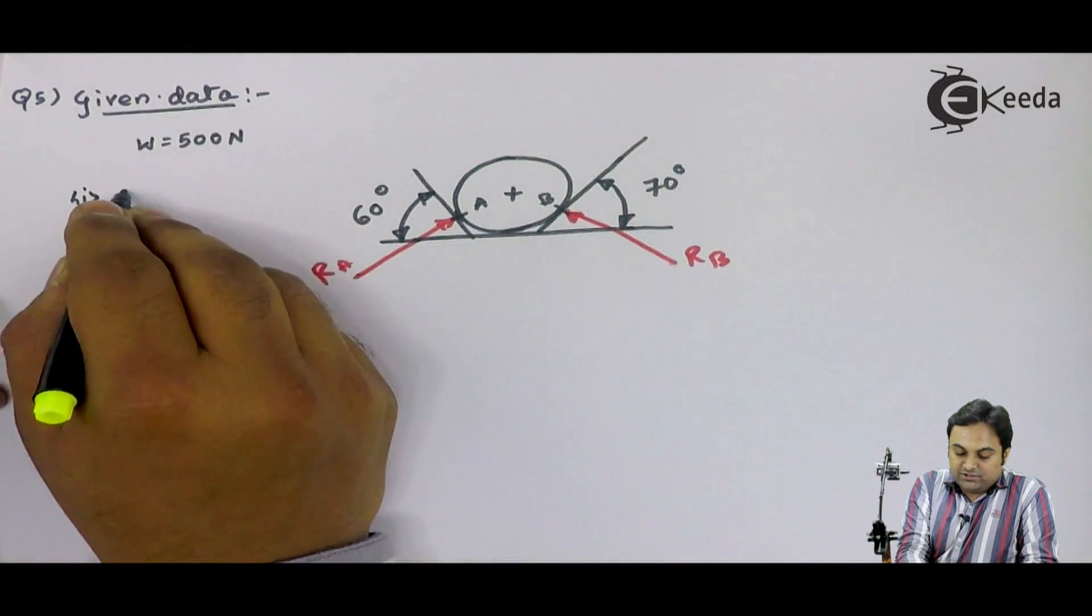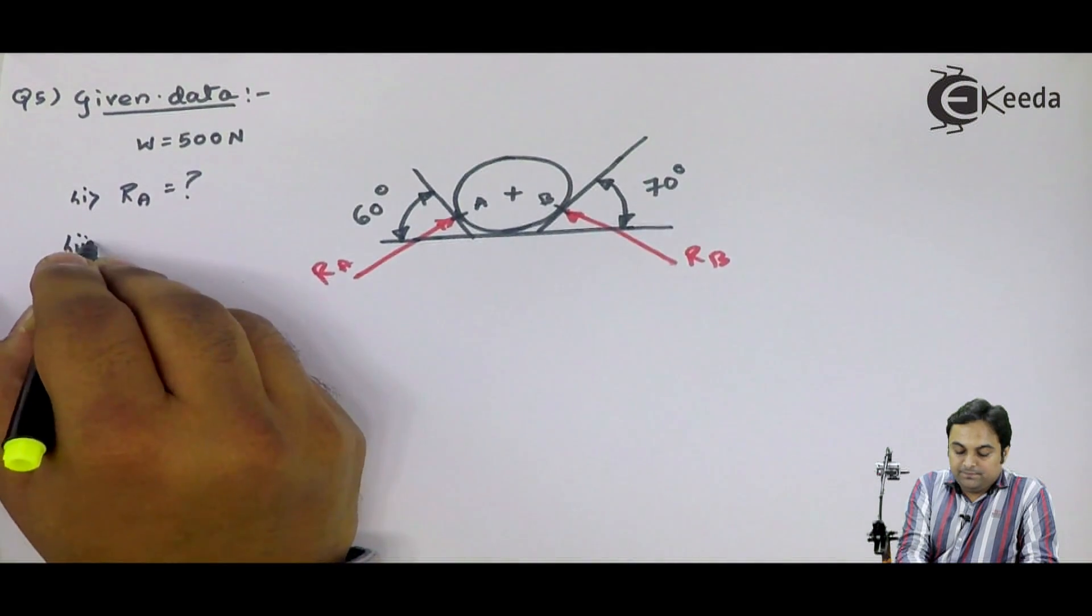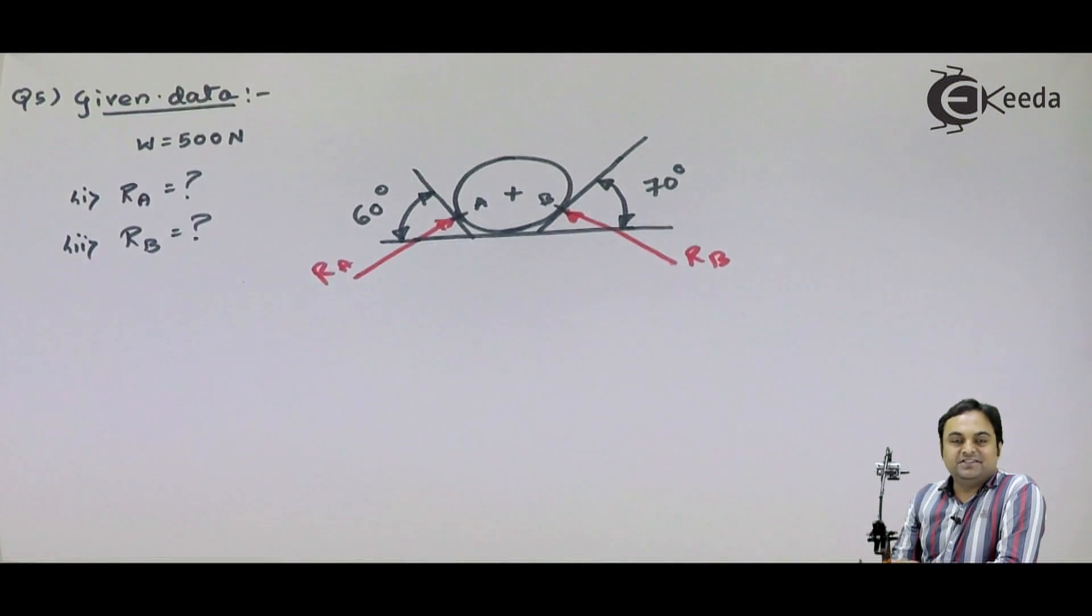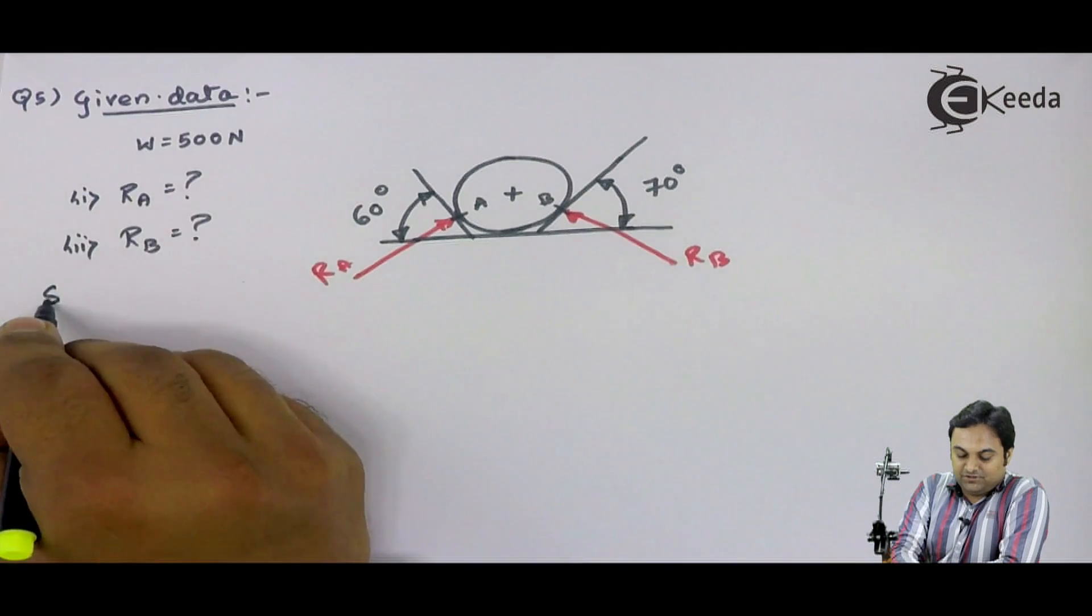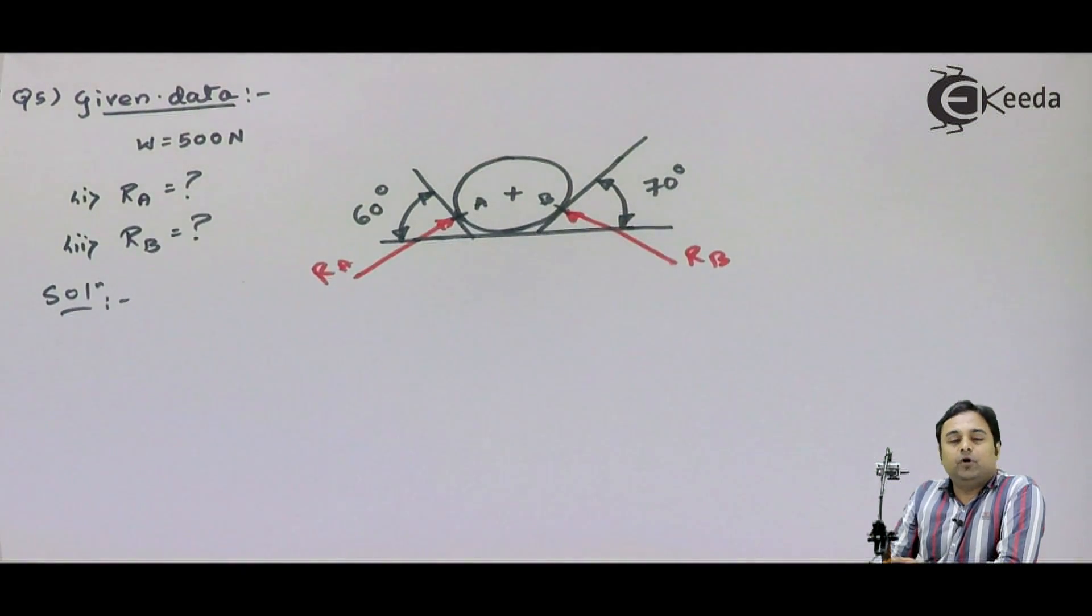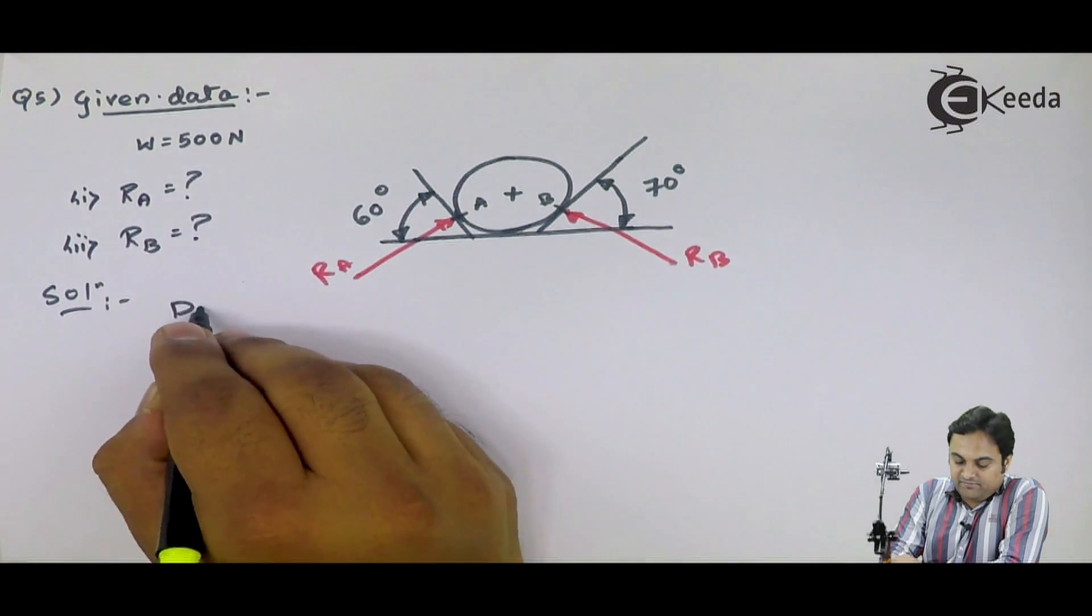My question is RA and RB. We will try to get this problem. I will write the solution. First of all, as in case of all previous problems, we need to solve FBD. That is, we have to draw the free body diagram first. I will say that drawing FBD.